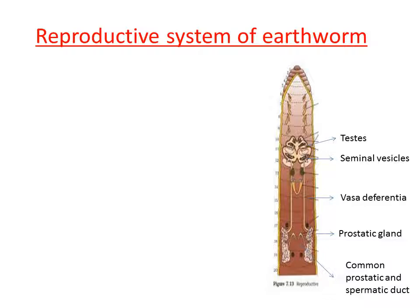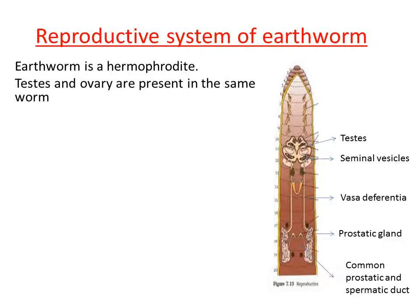Earthworm is a hermaphrodite animal. Hermaphrodite means bisexual animal — both the sexes are present in the same animal. The male sex organ as well as the female sex organ are present in the same animal. Unlike human beings, where male individuals produce male gametes and females produce female gametes, in earthworm both testes and ovaries are present in the same worm.